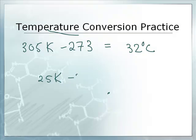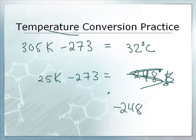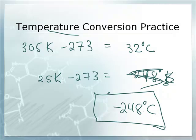Let's try one more. 25 Kelvin. So we subtract 273. 25 minus 273, we get negative 248 degrees Celsius. So that's how we do temperature stuff.